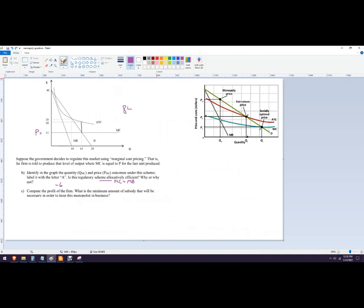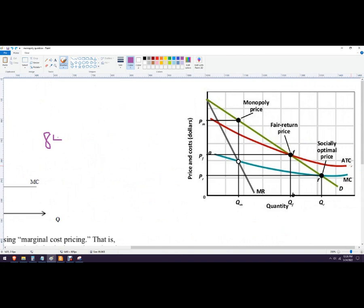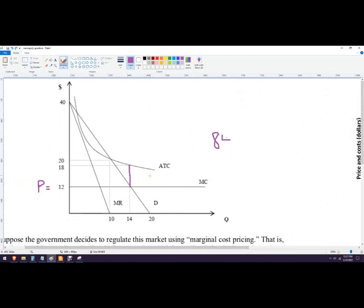Now there's also something called the fair return price that I get asked about sometimes. So fair return price is going to happen over here on this graph at the spot where average total cost equals demand. So when that happens, the firm is breaking even. So let's see where that is on our graph here. So average total cost, follow that down to here. And that's right about there.